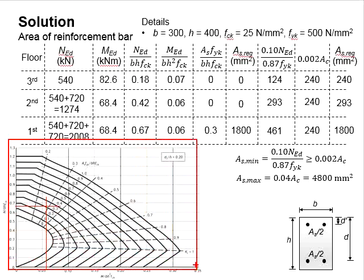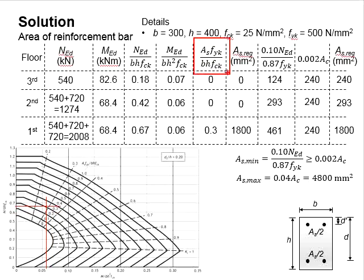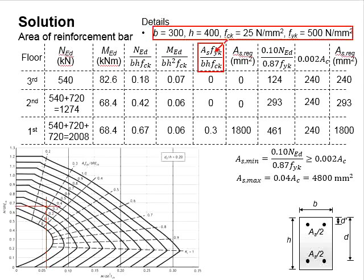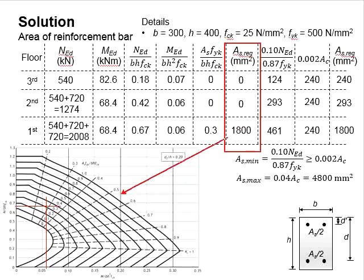Next, refer to the chart here. Find the AS, FYK, BH, FCK. Take this first floor for an example. The x axis is 0.06 and the y axis is somewhere between 0.67. They meet around 0.3 for the AS, FYK, BH, FCK. Reverse calculating this by substituting the relevant value into this, you will obtain the AS required. These are the AS required based on the chart.